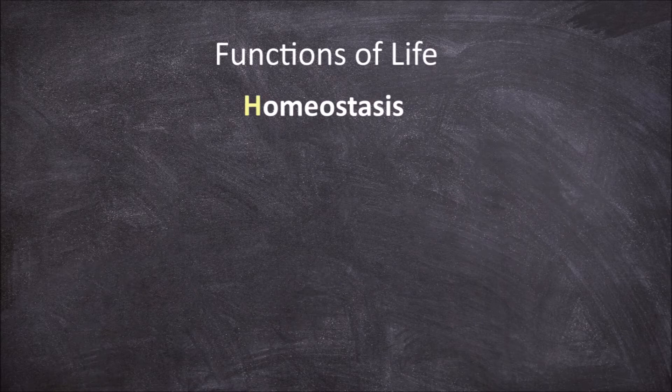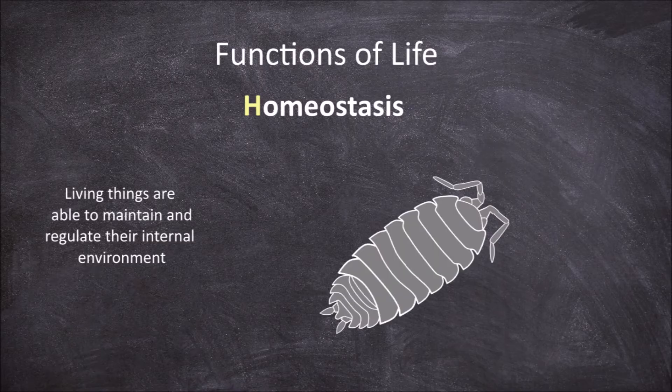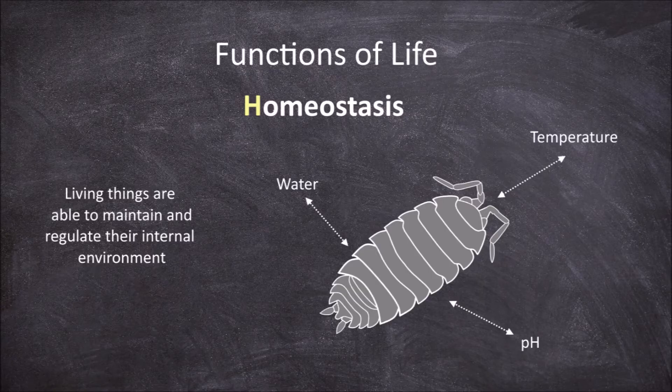Homeostasis is another essential functional characteristic of life. Living things are able to maintain and regulate their internal environments within a certain range, such as water levels, pH levels, or internal temperature, despite changes in their external environment.